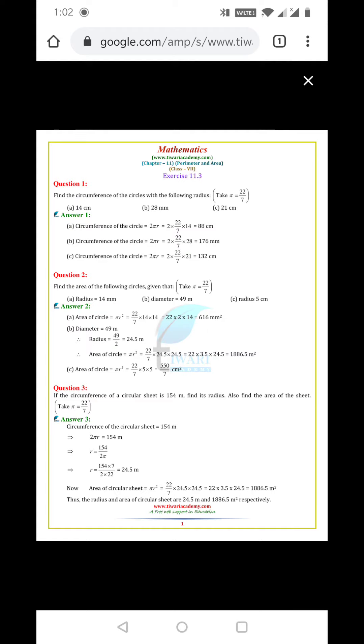Part A: find the circumference. The radius is 14 cm. We use the formula 2πr. So 2 times π, which is 22 by 7, times r which is 14, equals 88 cm.